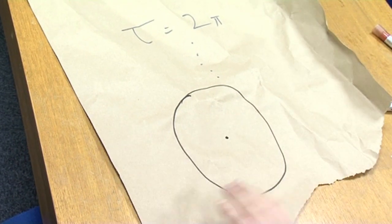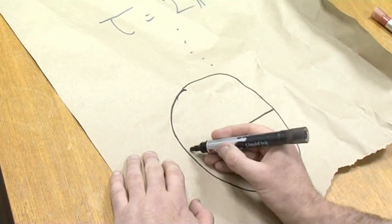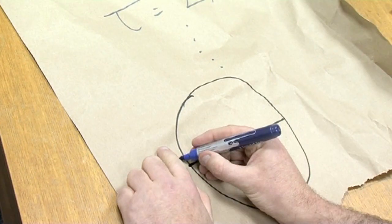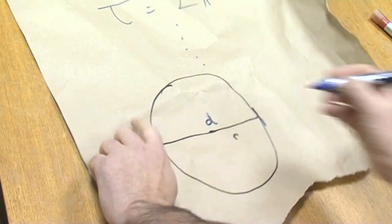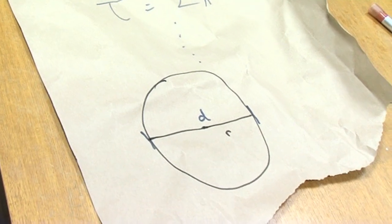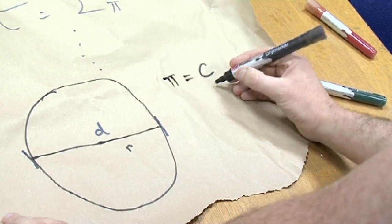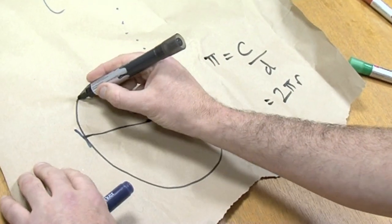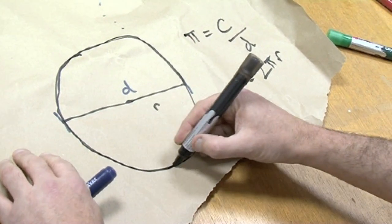Here's my very wonky circle. Let's put our centre there, and that's our radius r. And from there to there — that's d, the diameter. And we define pi, very simply, as the ratio of the circumference to the diameter. And this holds true for any circle, regardless of its size.